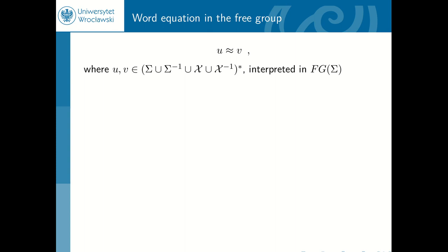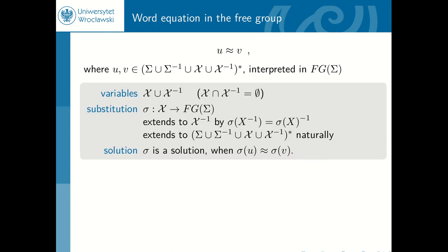The word equation we will be dealing with is given by two strings u and v, and we want to interpret this equality between them in the free group. Those two strings consist of sequences of letters and variables and the inverses of them. The variables — every variable also has its inverse, which are syntactically different. The substitution assigns to every variable a word or an element of the free group, and we require that the substitution for the inverse of a variable is the corresponding substitution for the variable taking the inverse. Such a substitution naturally extends to sequences of letters and variables by homomorphism — we concatenate them all together and then take the normal form. A substitution is a solution if after substitution and computing the normal form, we get the same element in the free group.